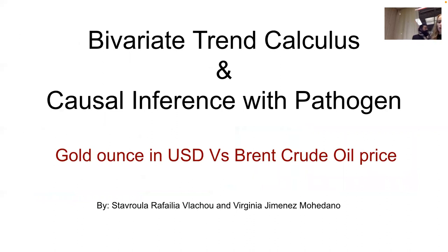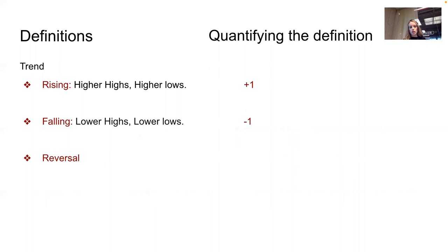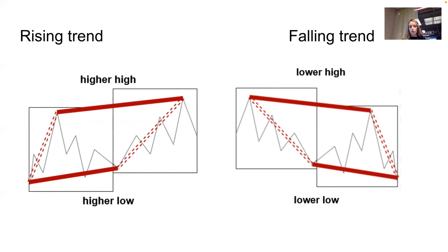Hello, I'm Rafaelia, and together with my teammate Virginia we're going to talk about bivariate trend calculus and causal inference. First, a few definitions: a trend is defined as rising if it has higher highs and higher lows, and falling if it has lower highs and lower lows. We can quantify this by assigning values of +1 for rising trends and -1 for falling trends.